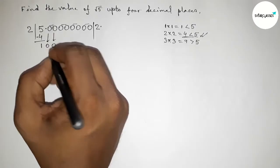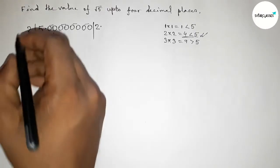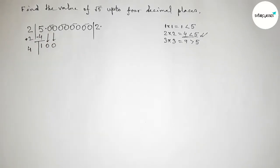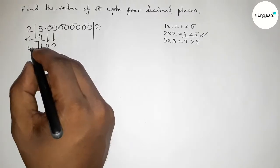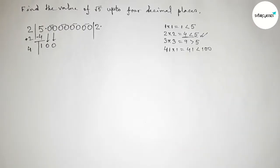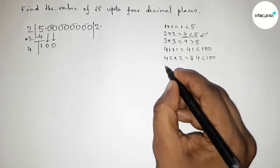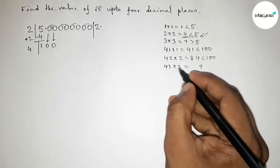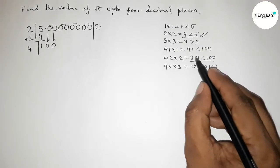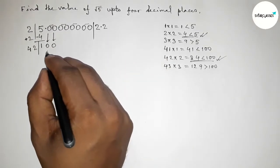Bring down the first pair of zeros to get 100. The key step: take the last quotient digit 2 and double it to get 4, writing 4 beside the divisor to make 4_. Now find a digit to place beside 4 and multiply. 41×1=41, less than 100. 42×2=84, less than 100. 43×3=129, greater than 100. So we take 2, writing 42×2=84. Subtract 84 from 100 to get 16.